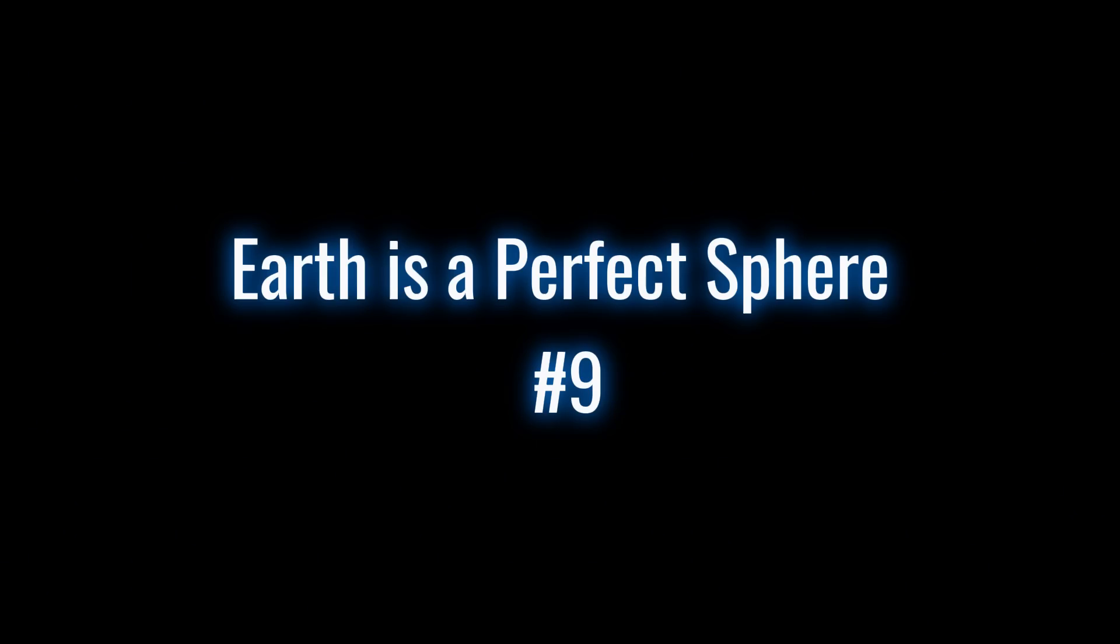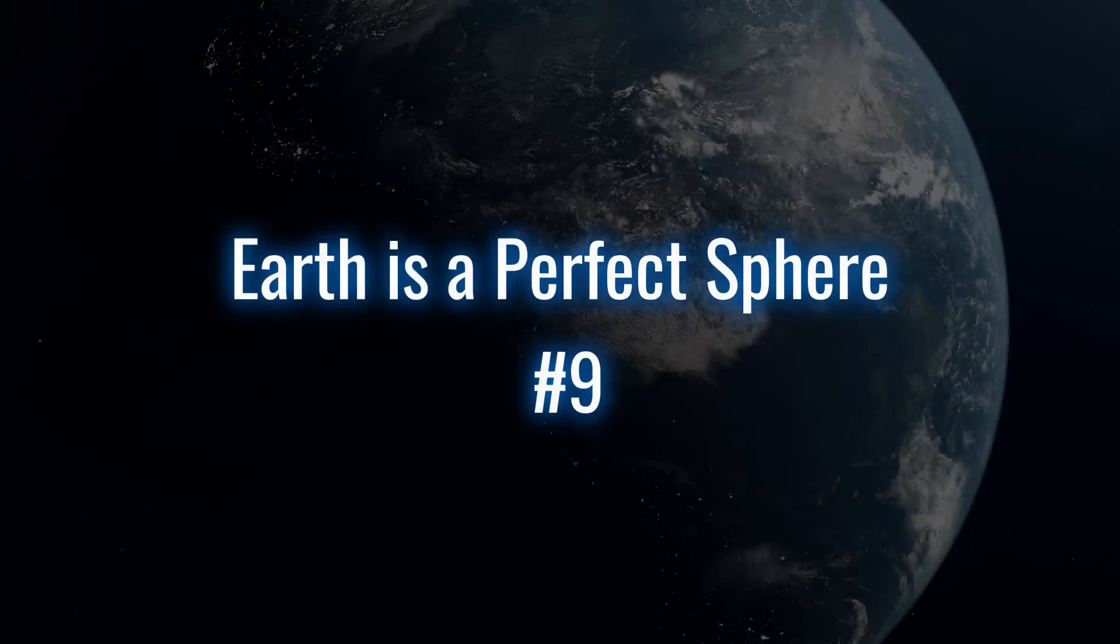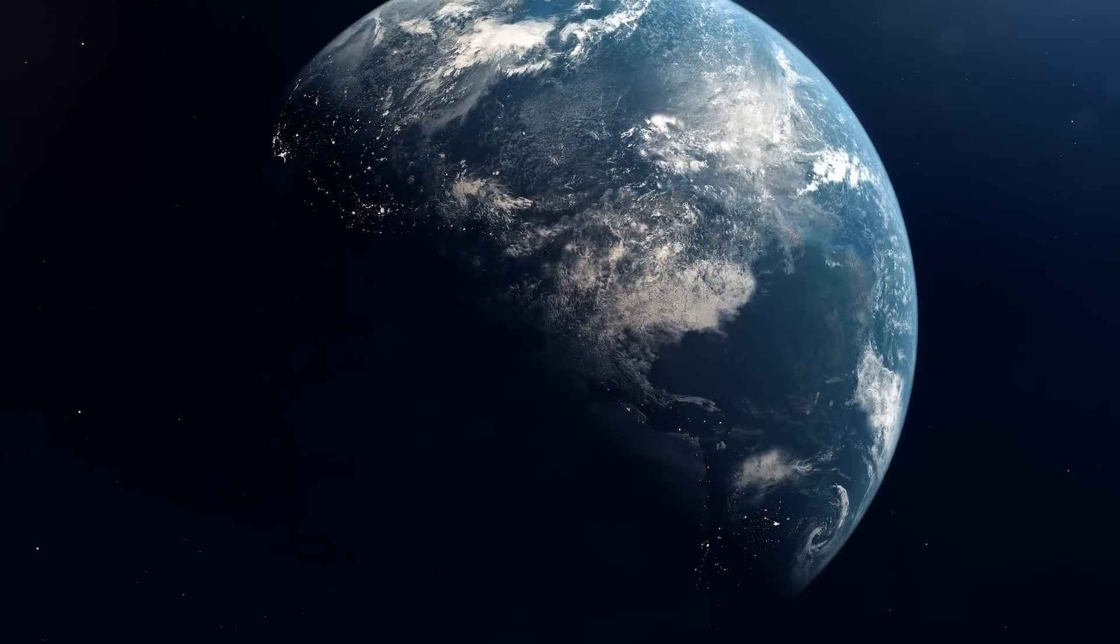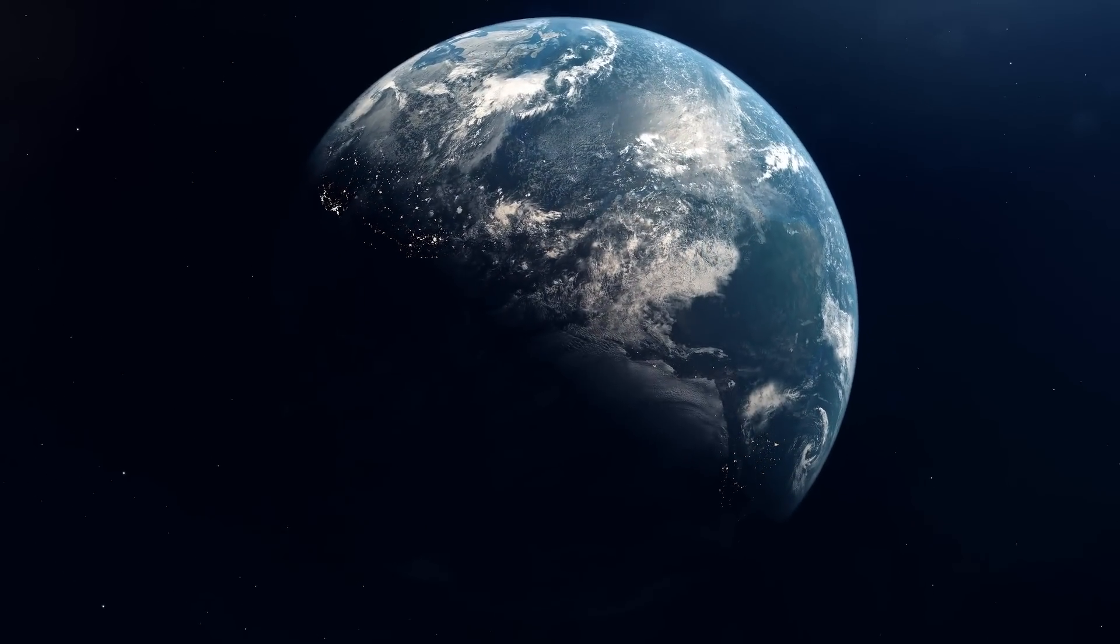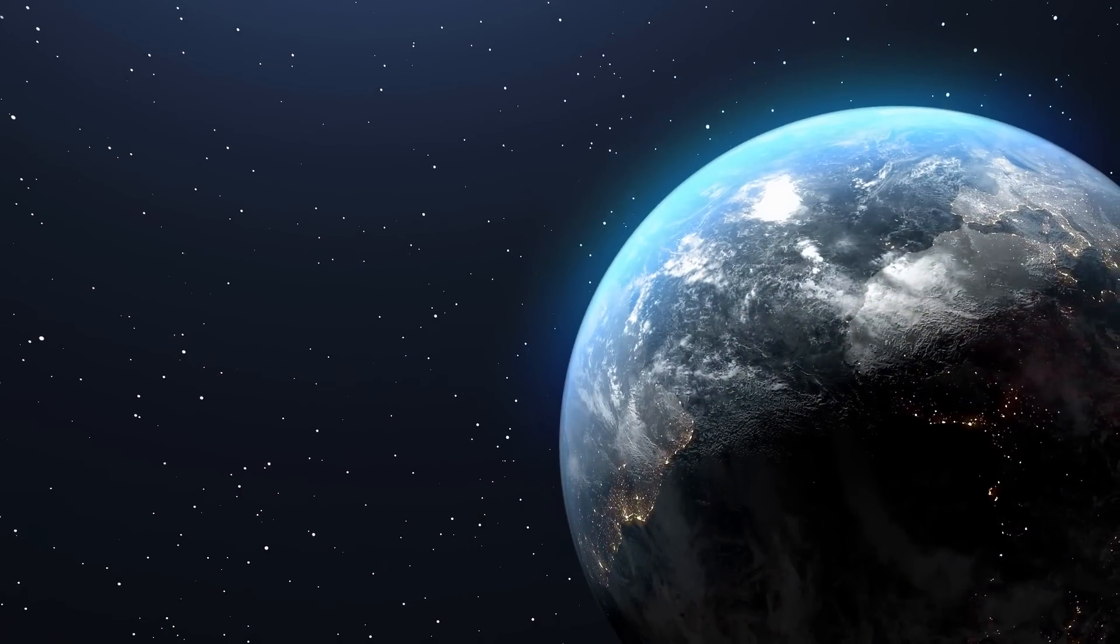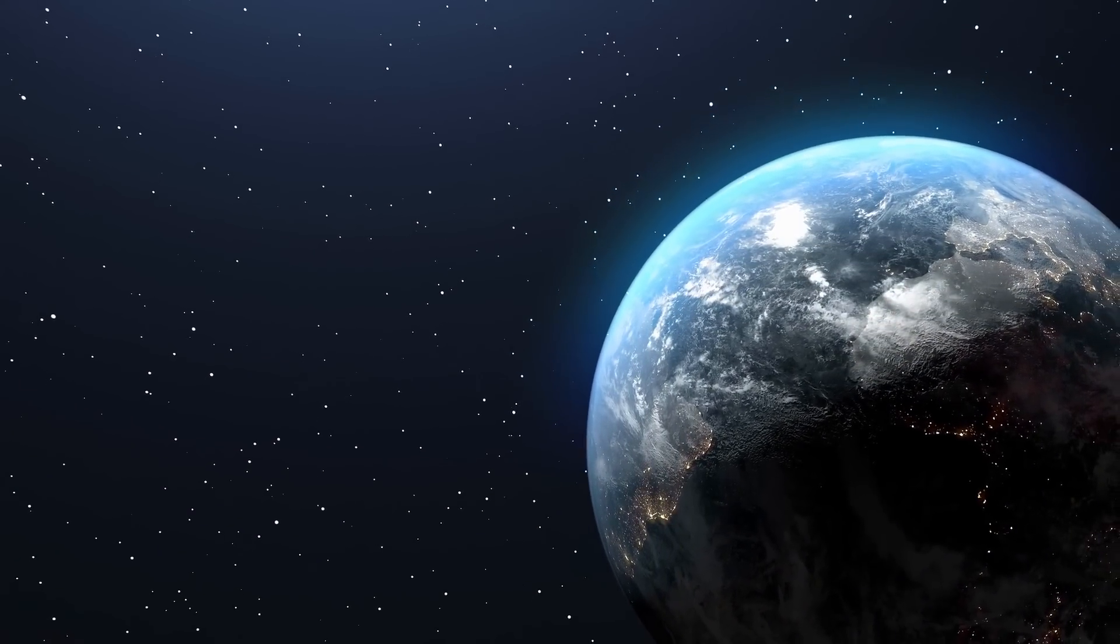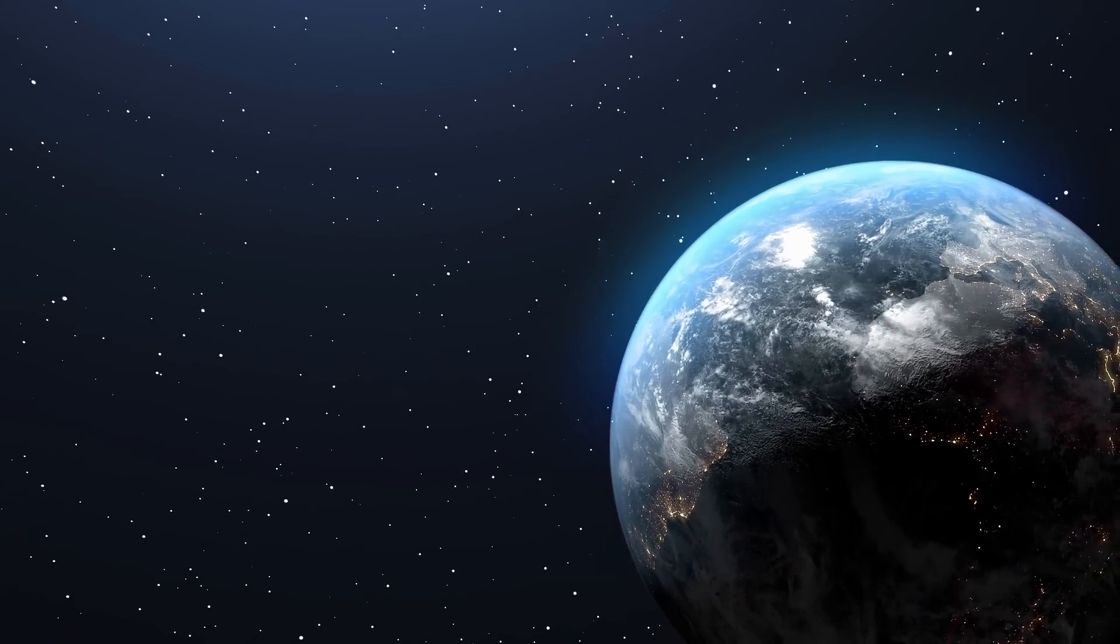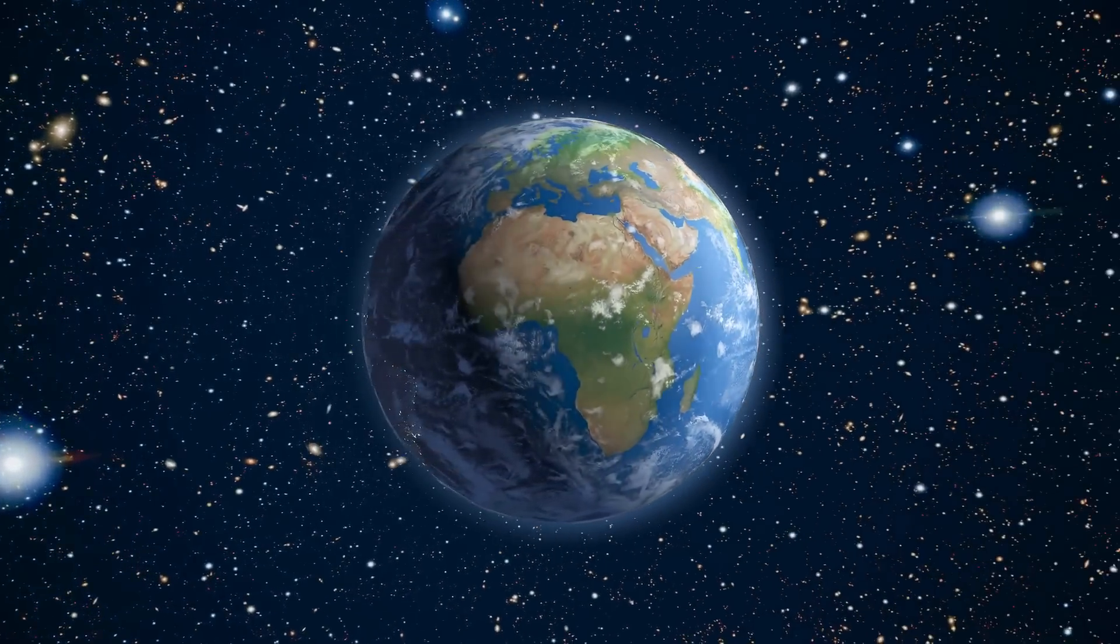9. Earth is a perfect sphere. Nope again. Earth bulges at the equator because of its spin. So our planet is more of an oblate spheroid. Fun fact, that bulge actually makes it easier to launch rockets from the equator. Thanks, gravity assist.